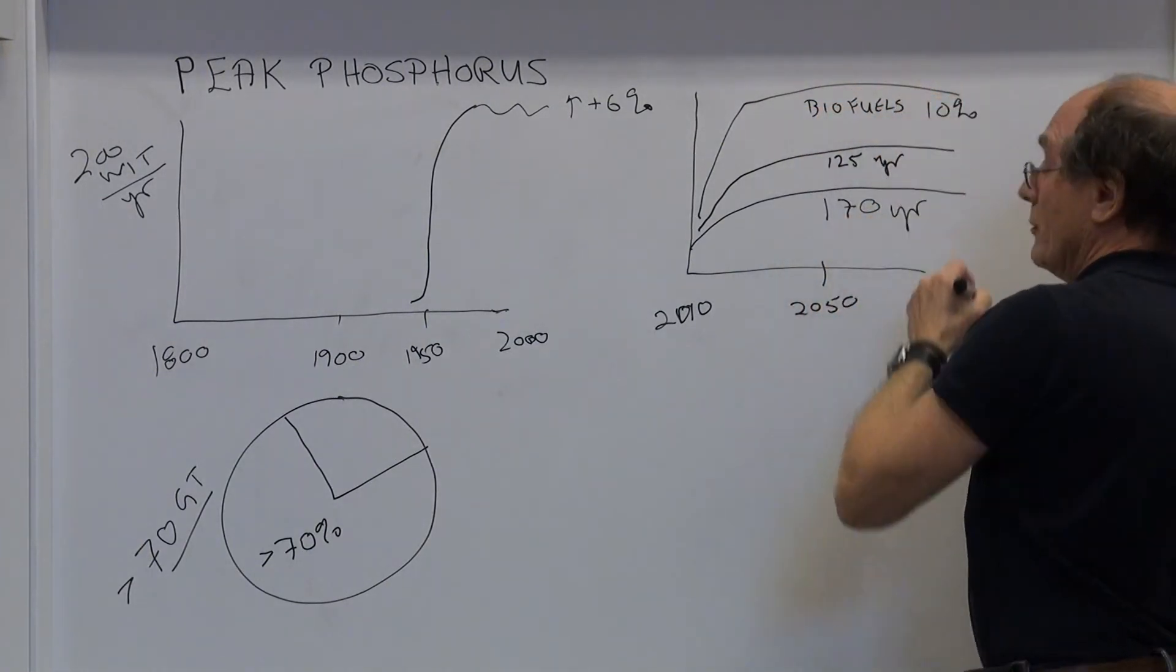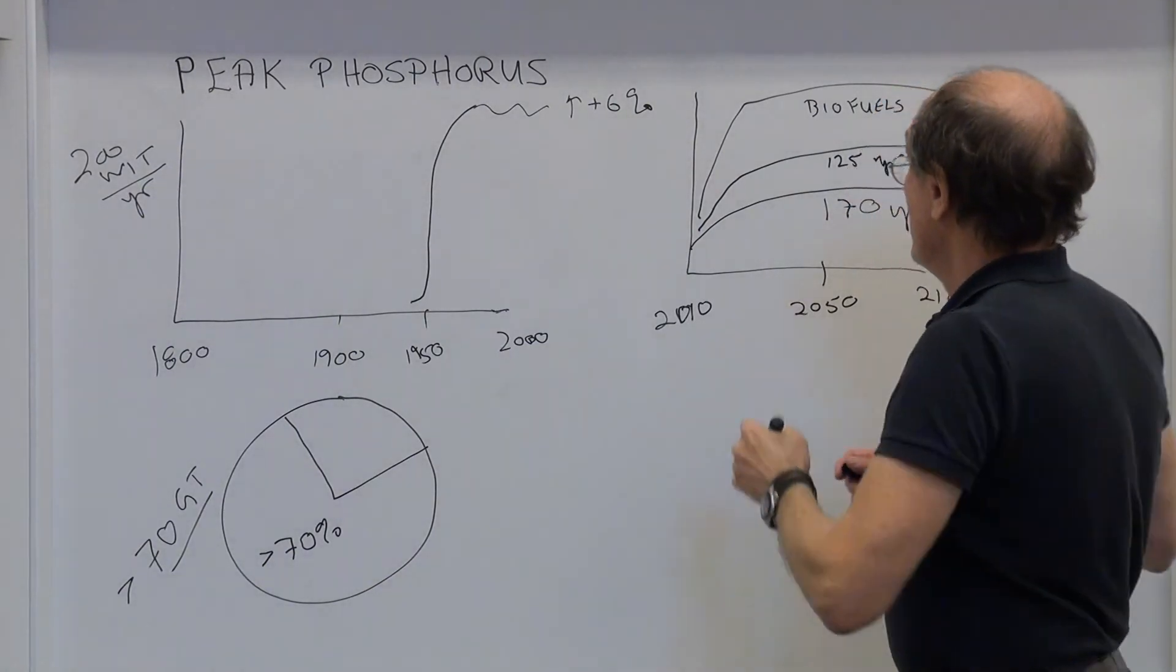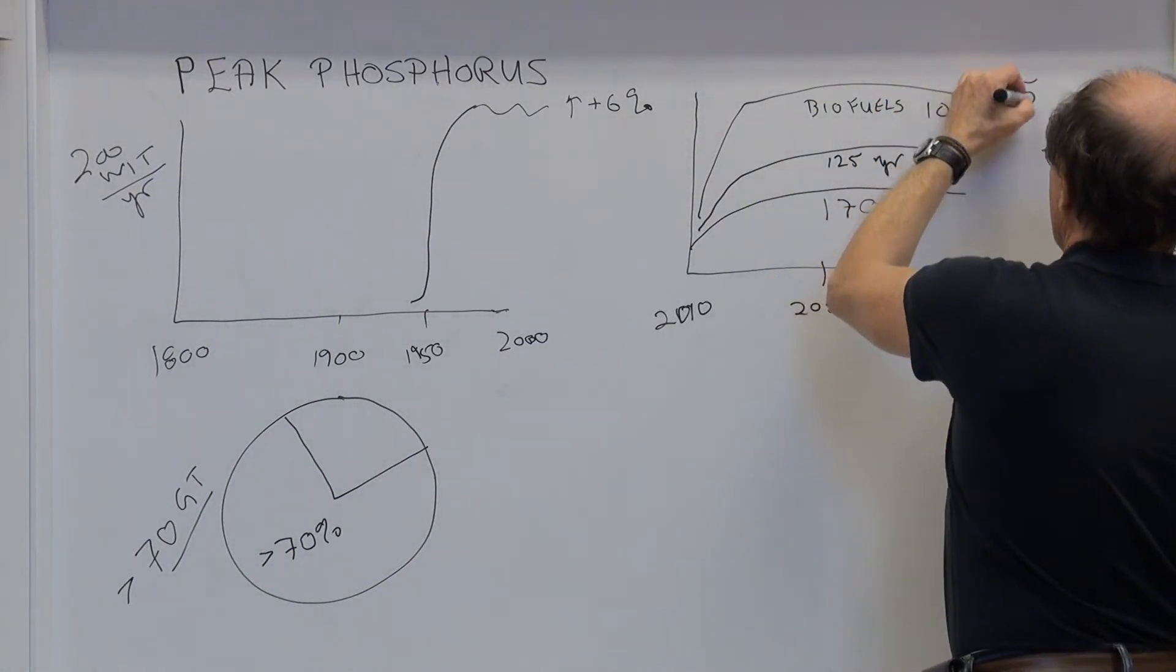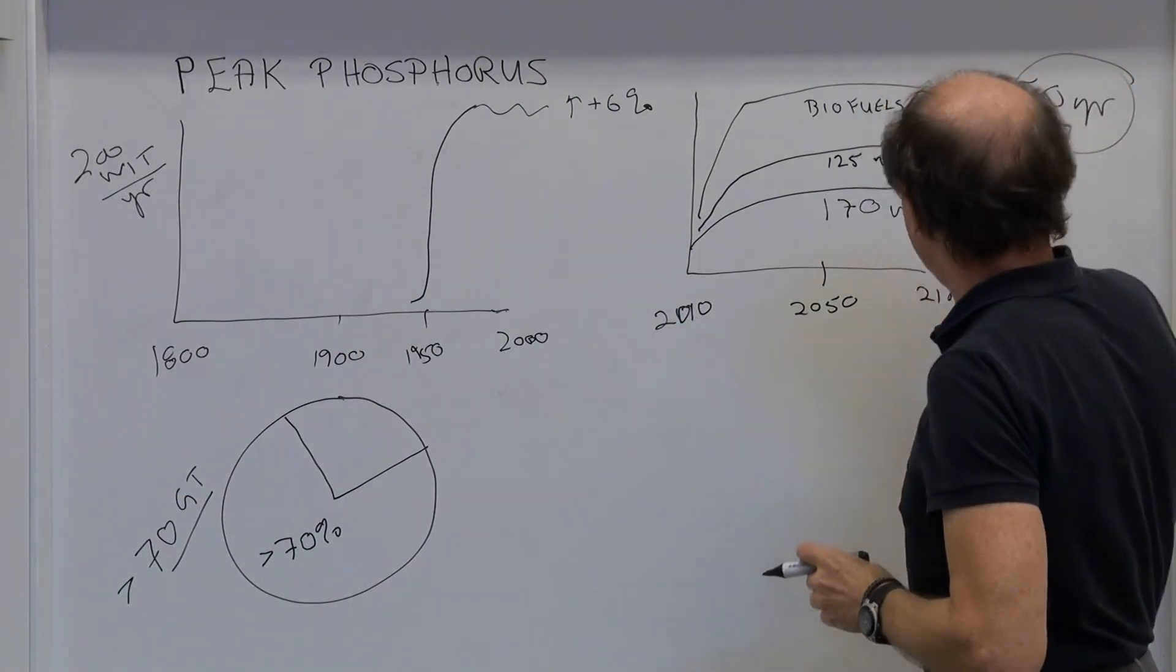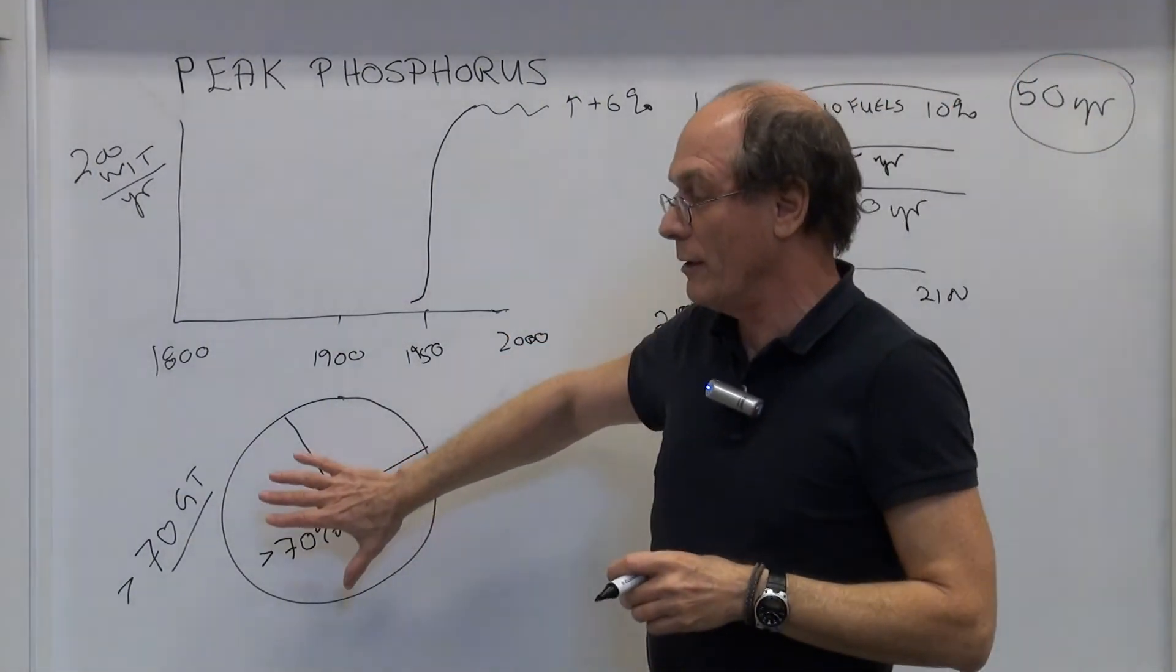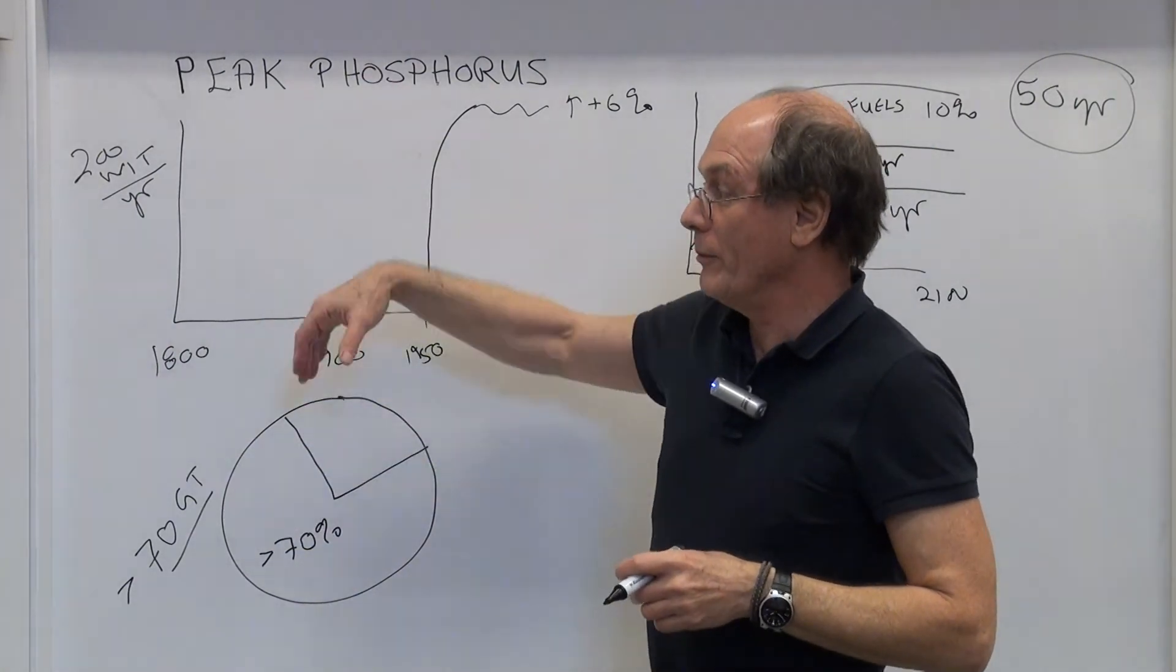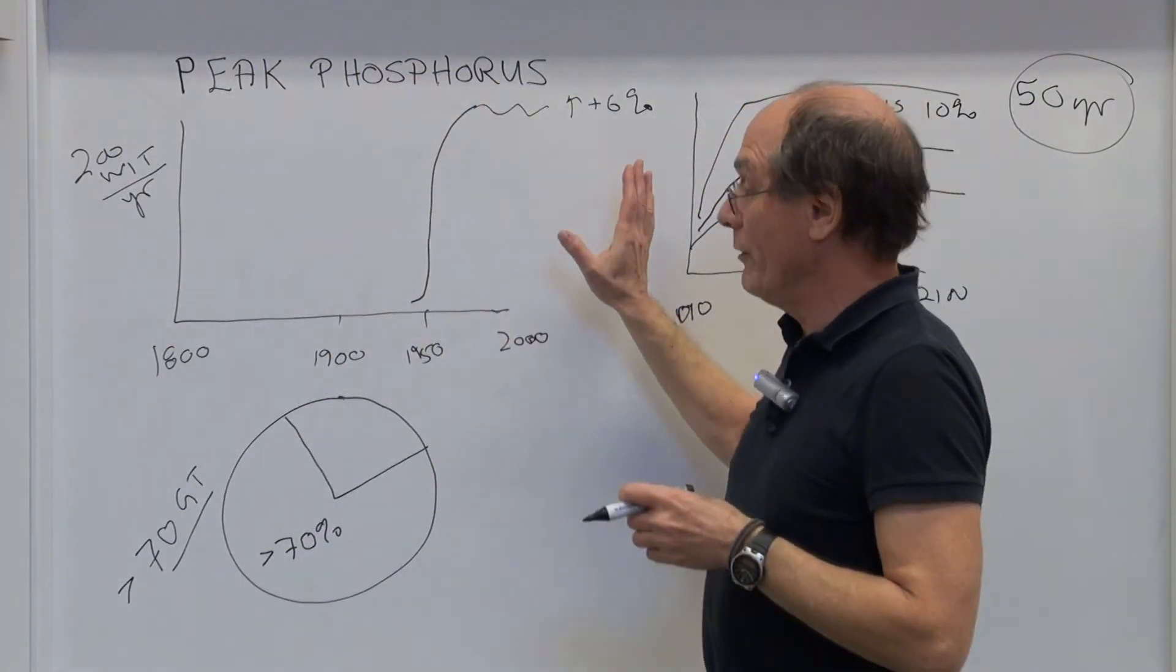representing about 10% of the global requirement in energy. So we're talking about exhaustion of the phosphorus in 50 years' time. 50 years' time, that means we have a geopolitical problem. We have a problem that has to do with a planetary boundary.